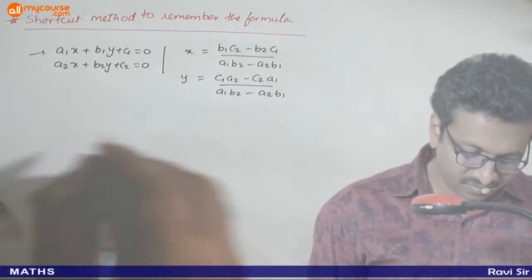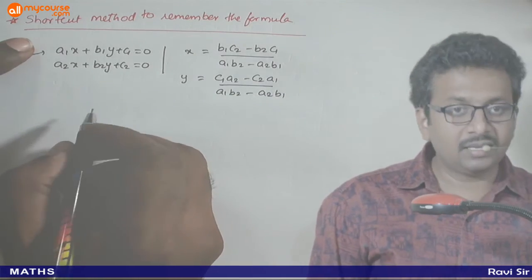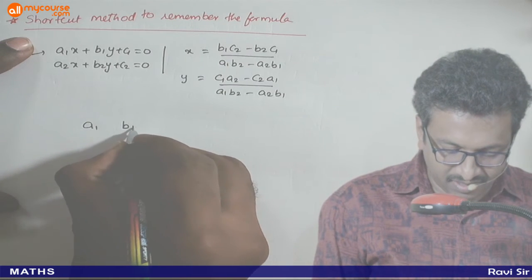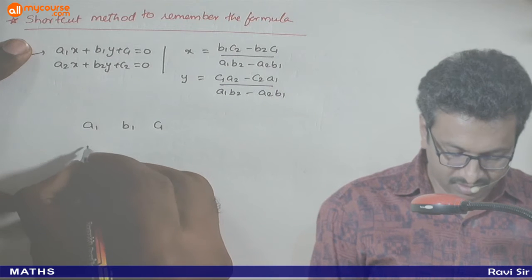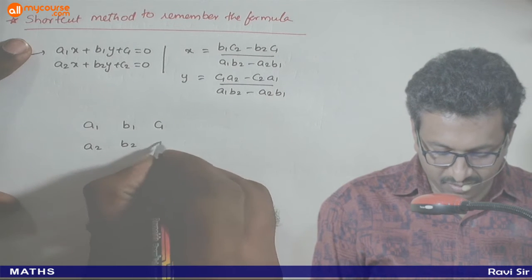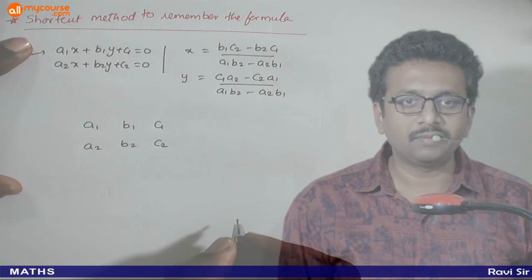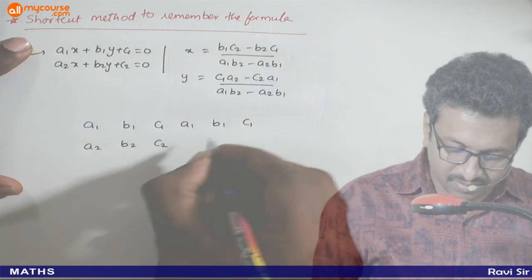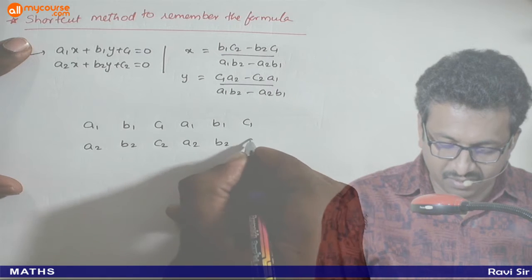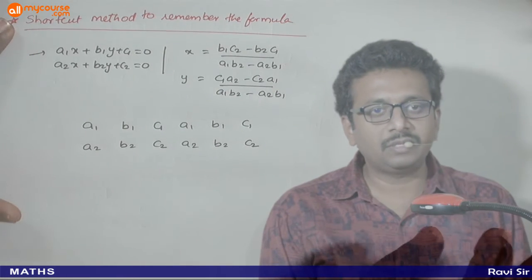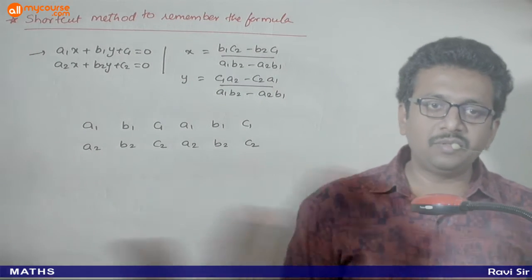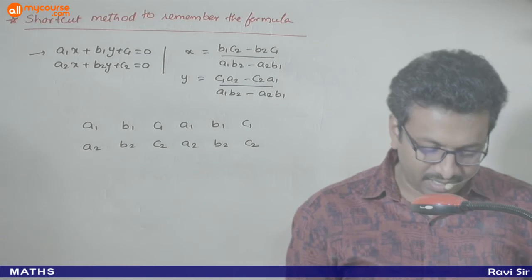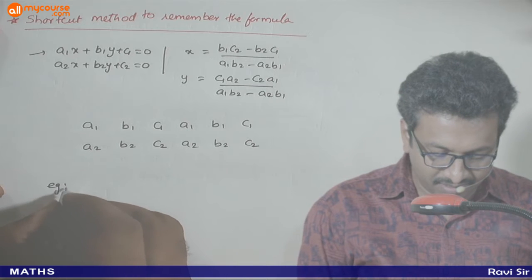First what I do is write all the coefficients as a1 b1 c1, a2 b2 c2. Then write those coefficients two times in a line. My example bhi simultaneously karta hoon.